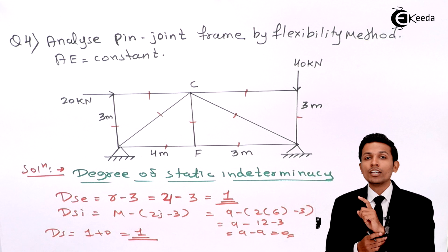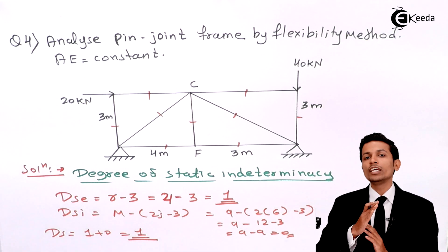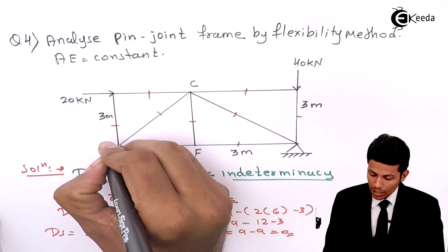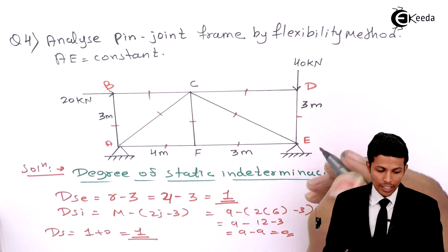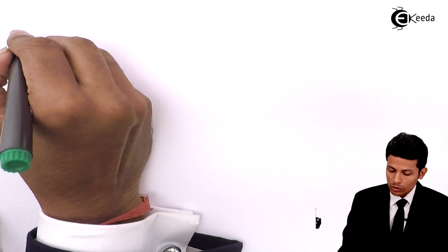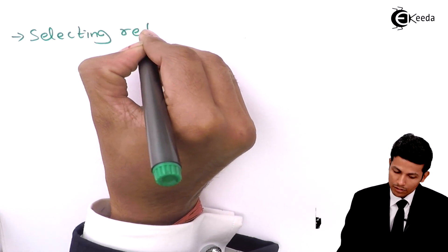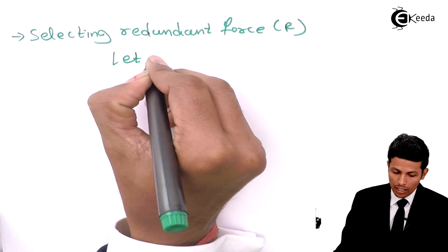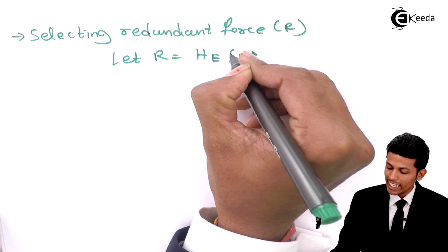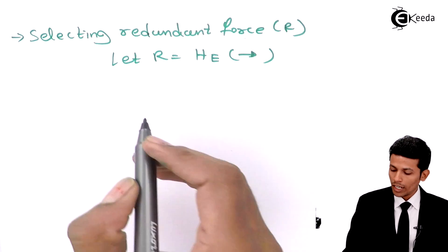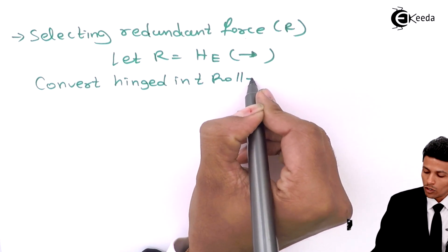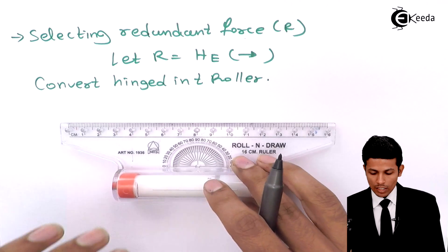Since our external indeterminacy is 1, we don't need to remove members — we need to remove a reaction. Either we remove VA or VB. We are selecting the redundant force R equal to HE, removing the horizontal reaction at E. Now convert the hinge at E into a roller and draw the diagram to find the reactions — this is the P-analysis.